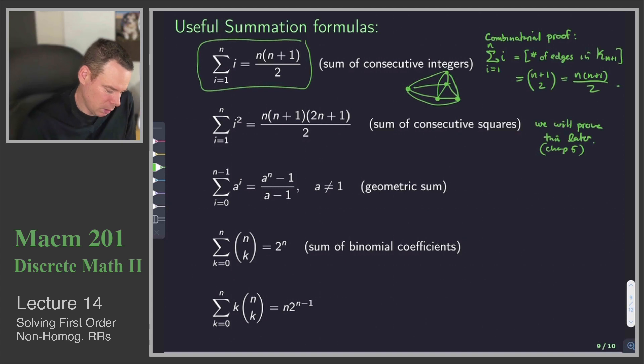How about the geometric sum? We can say let S be that sum. It's 1 plus a plus a squared plus dot dot dot all the way up to a to the power of n minus 1. And then what I'll do is I will multiply that by a and subtract it off again. What's left over?